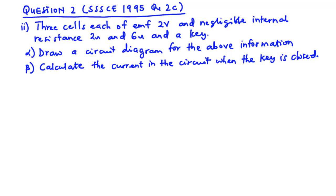Our first question is SSCE 1995 question 2c. We have three cells each of EMF 2 volts and negligible internal resistance, resistors of 2 ohms and 6 ohms, and a key. For part alpha we are to draw a circuit diagram, and for part beta we are to calculate the current in the circuit when the key is closed.